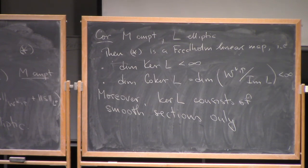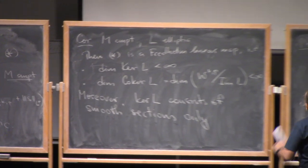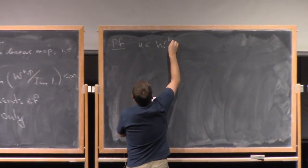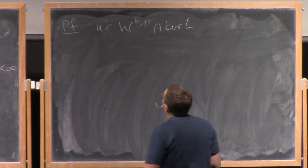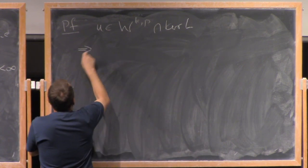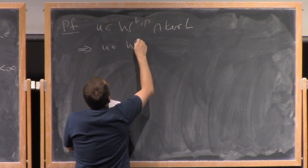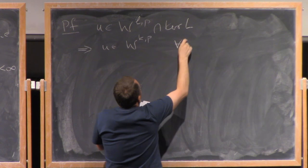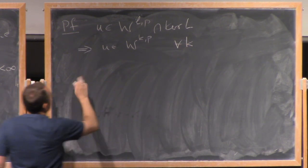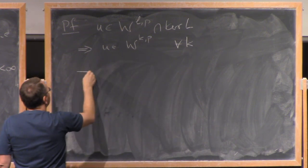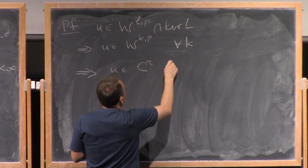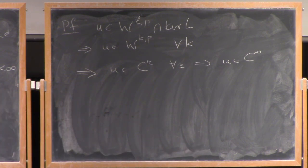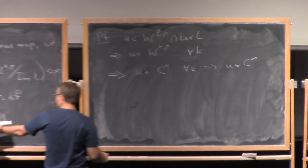So one more part of the theorem is that the kernel of L consists of smooth sections only. Okay, so let me give you an idea of the proof, because some elements of this proof will play a role in the sequel. So if U is an element of W^{k,p} and is in the kernel of L, by the elliptic estimate, we know, then, that U is in W^{k,p} for any k. Anyway, but from this, by the Sobolev Embedding Theorem, we know that U is in C^R for any R, and this tells us that U is a smooth section on M.